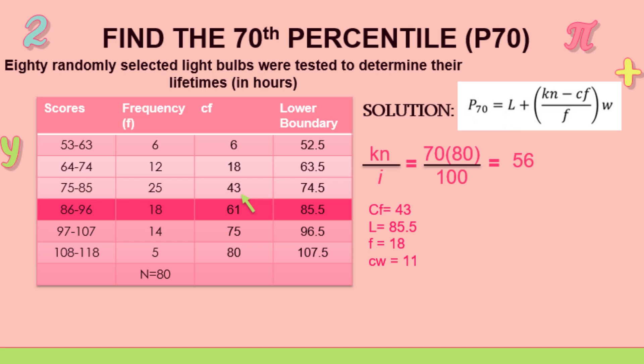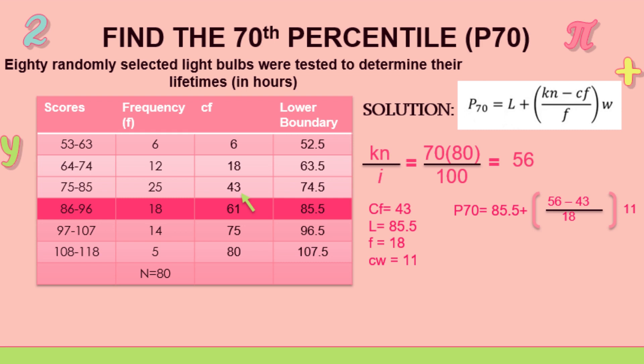And we're going to get 43 for the cumulative frequency, lower boundary is 85.5, frequency is 18, and again class width is 11. So we have 85.5, so 56 minus 43 over 18 times 11.